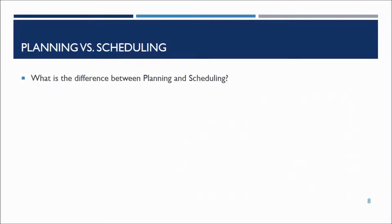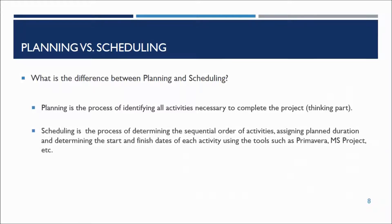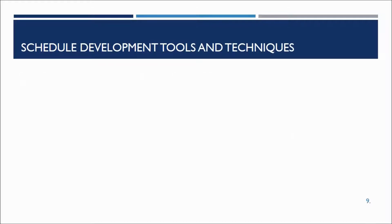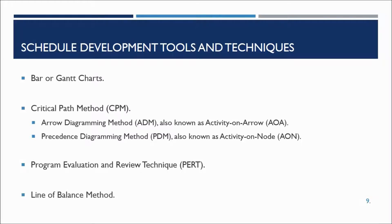What is the difference between planning and scheduling? Planning is the thinking part — the process of identifying all activities necessary to complete the project. Scheduling is the process of determining the sequential order of activities, their duration, and computing dates of each activity using tools such as Primavera or MS Project. Scheduling techniques include bar chart, CPM (activity on arrow and activity on node), program evaluation and review technique, and line of balance.